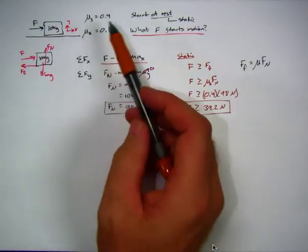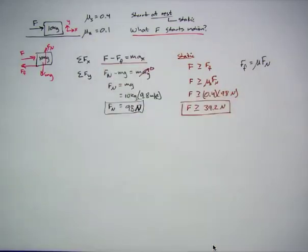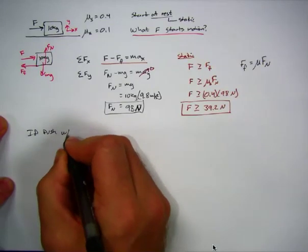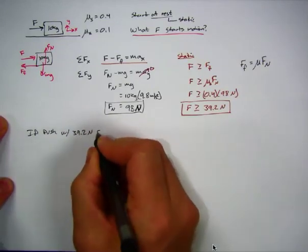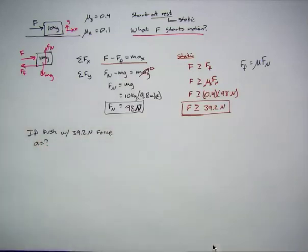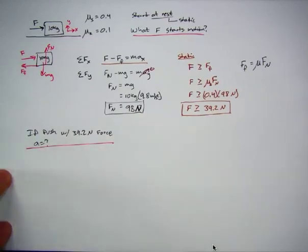Once the box starts to move, we transition into the kinetic realm — it becomes easier to keep it moving. A secondary question could be: if I push this box with a 39.2 newton force, what will the acceleration be? Now that we've decided 39.2 newtons overcomes static friction, we can ask another question — push the box at 39.2 newtons, it overcomes static friction, and let's figure out the acceleration.